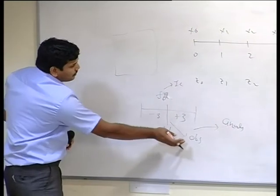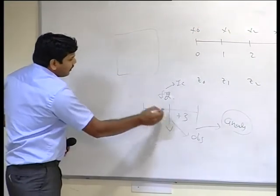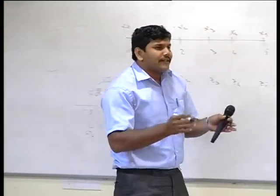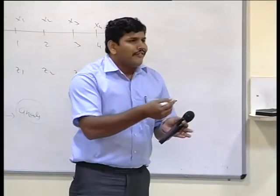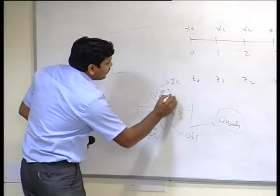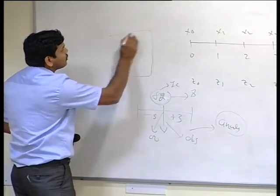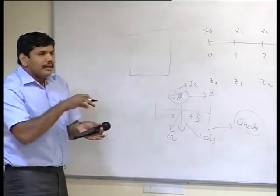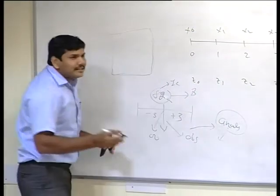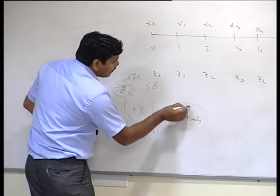After the assimilation of observations over this first guess, we get some analysis — a modified field at time zero. We save that. Our initial condition is based on this analysis. We also have information about the boundary of our domain for the short range — for example, regional quantities. With the help of these two files — the analysis and the first guess — and our previous boundary condition, we modify our boundary condition.